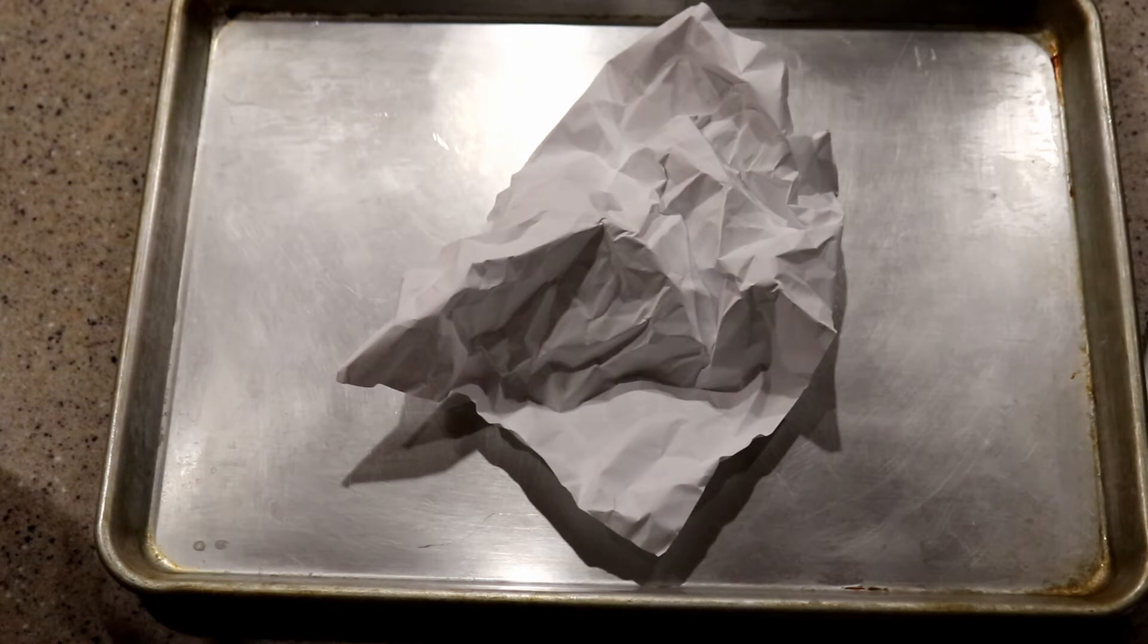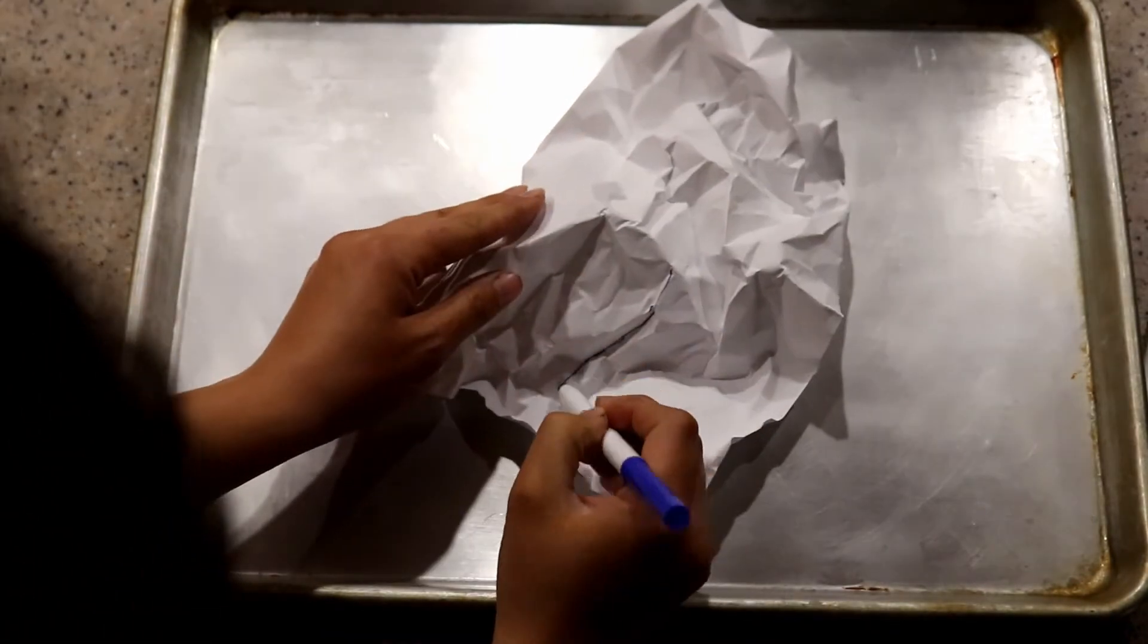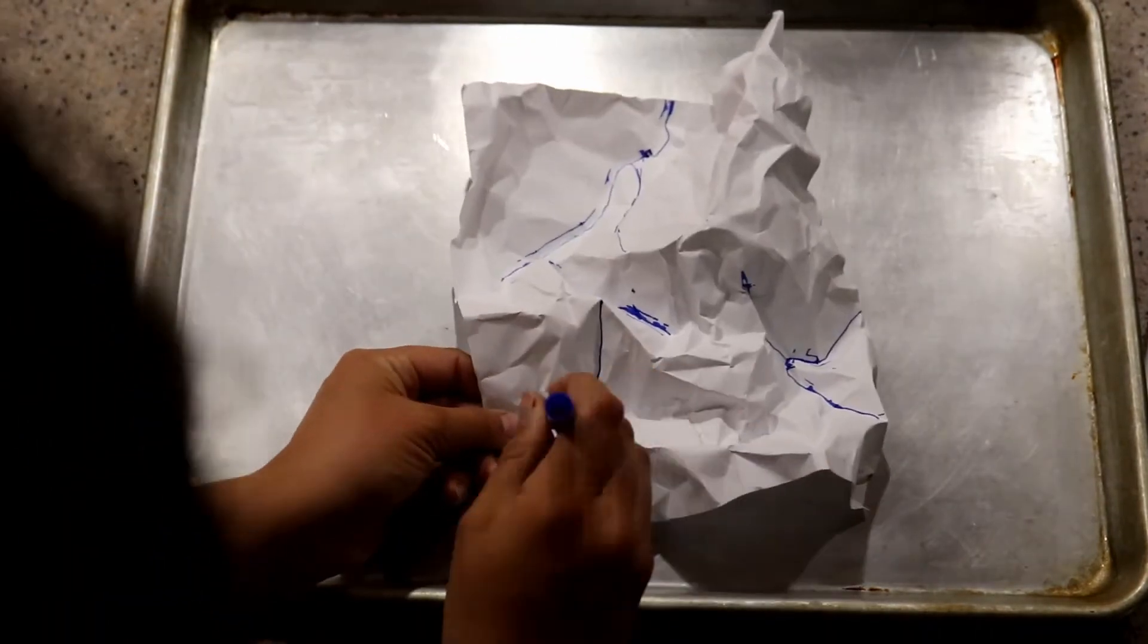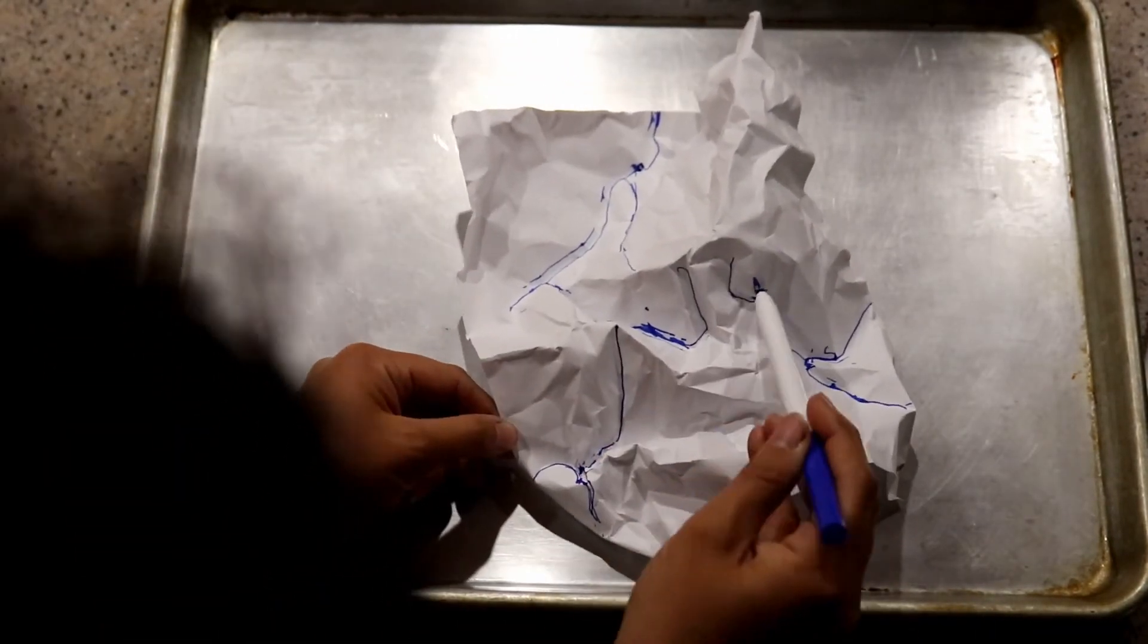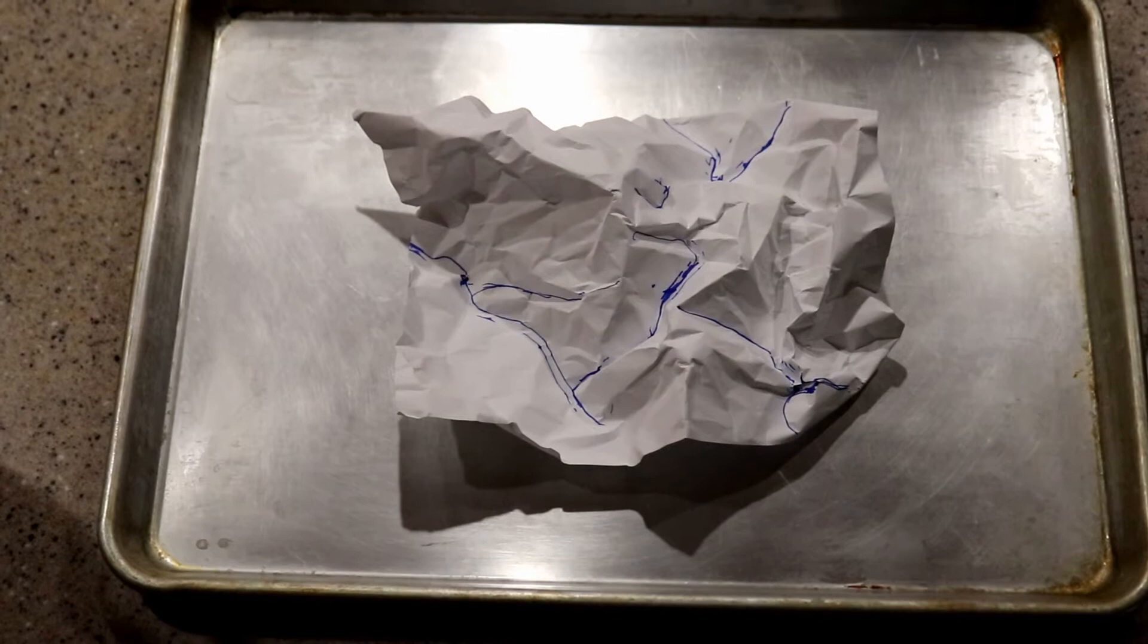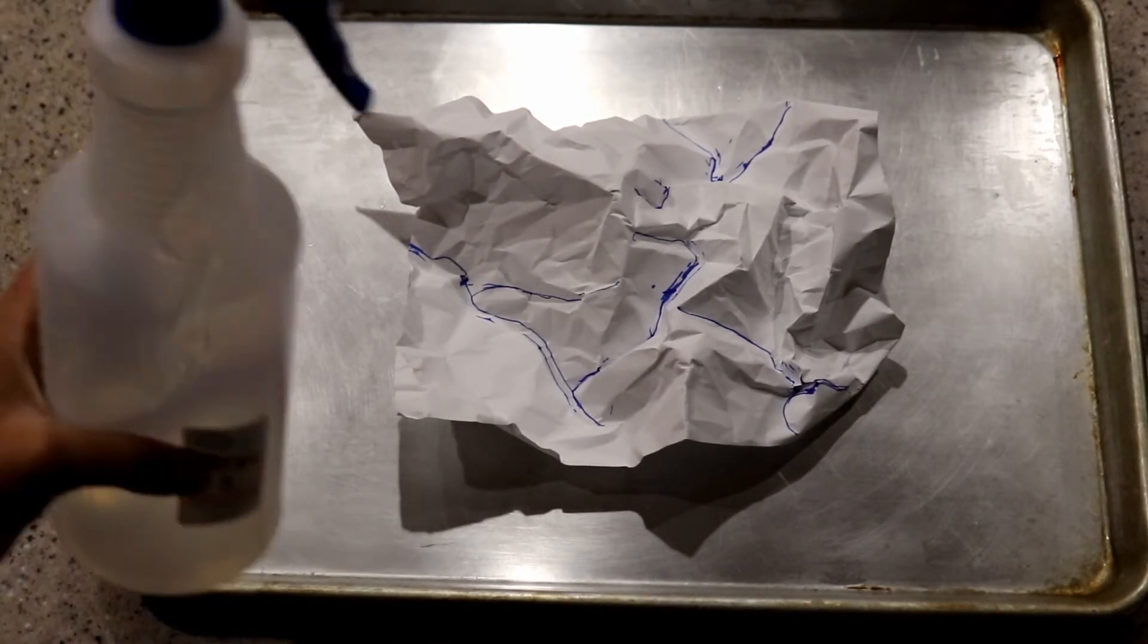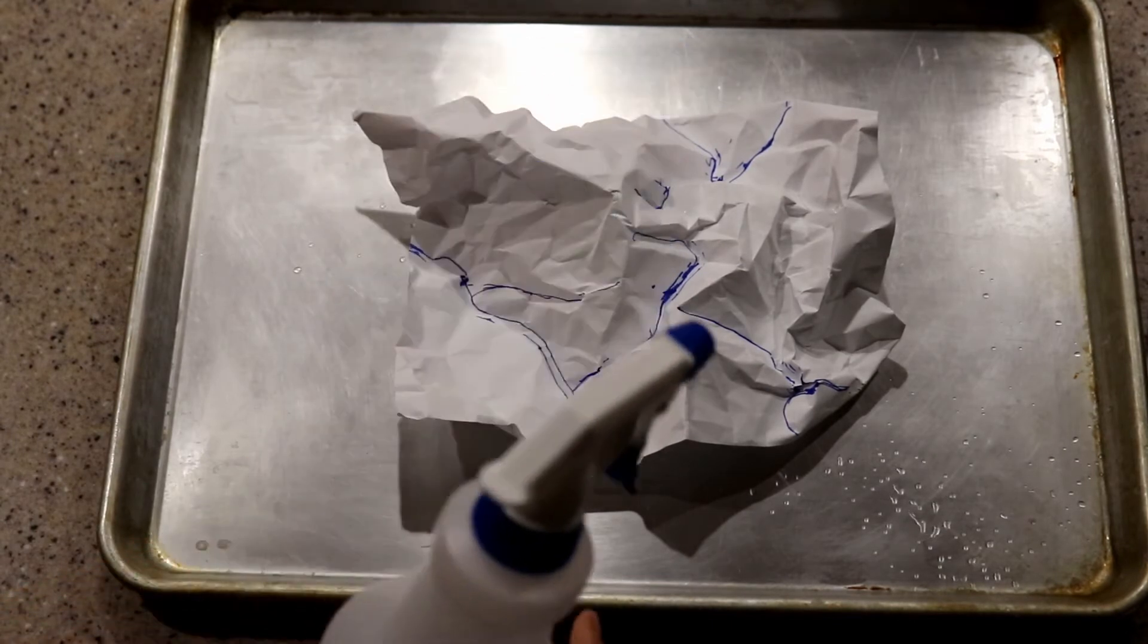And then I want you to draw where you think your streams and rivers are on your watershed. So I'm gonna draw mine. So I drew where I thought my rivers and streams would be on my watershed. And so now you get to test it. So you're gonna take your spray bottle and you are going to spray.